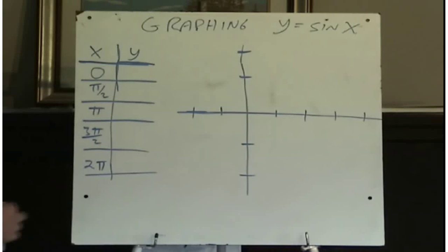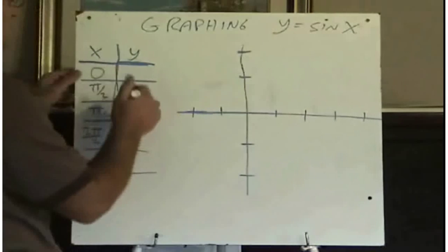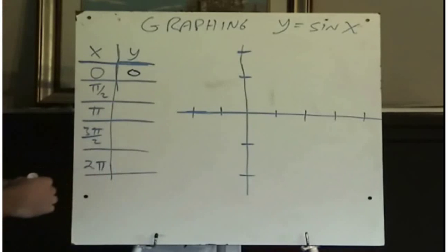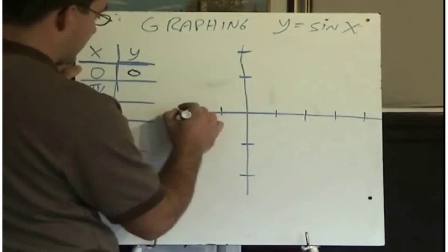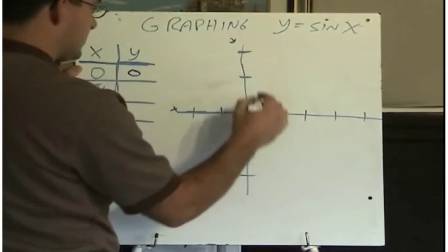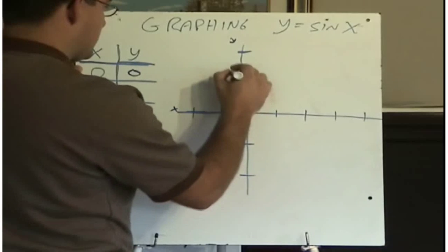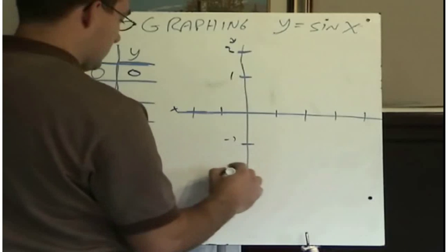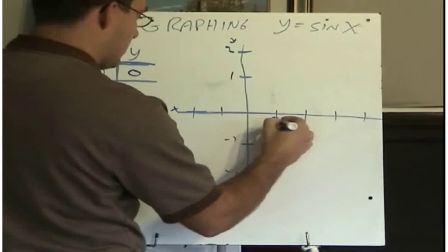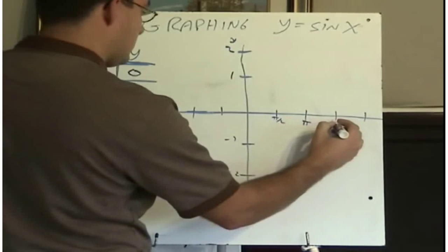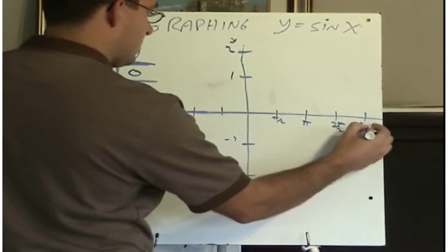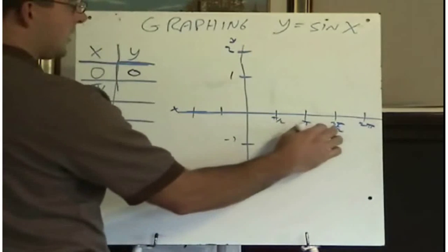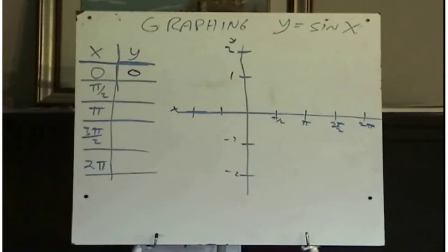In our calculator, if we put in 0 for x, we would see that the sine of 0 gives us 0. So if I plot this point — this is my x-axis, this is my y-axis. Let's put a scale on here: pi over 2, pi, 3 pi over 2, and 2 pi — those are some angles: 90 degrees, 180 degrees, 270 degrees, and 360 degrees.